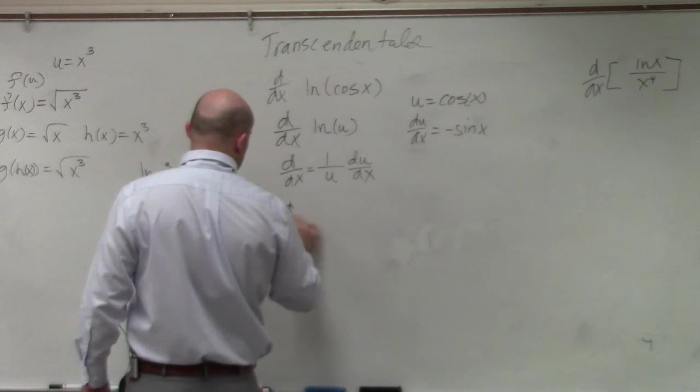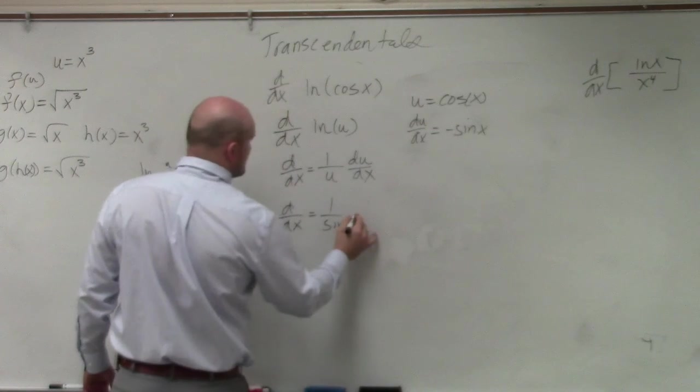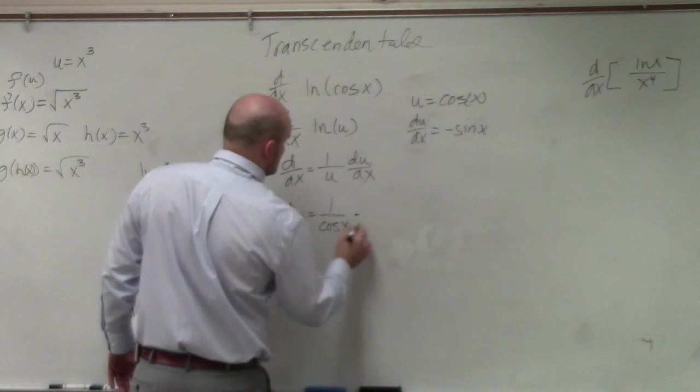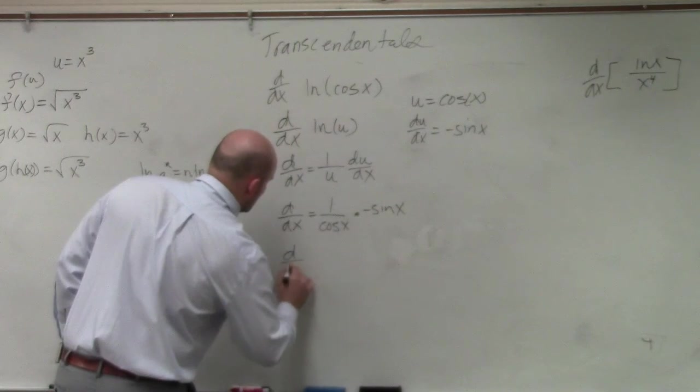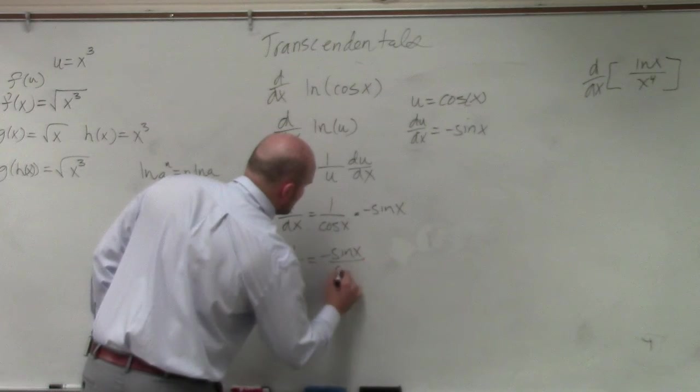So I'd have d over dx equals 1 over sine of x times, I'm sorry, 1 over cosine of x, times negative sine of x. d over dx is equal to negative sine of x over cosine of x.